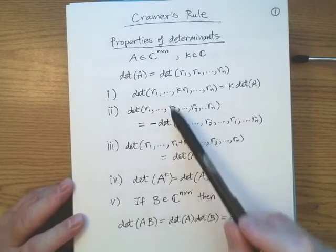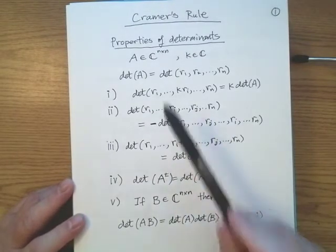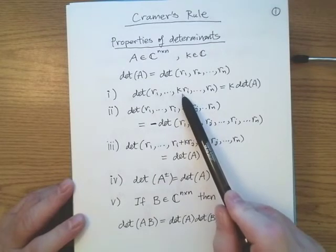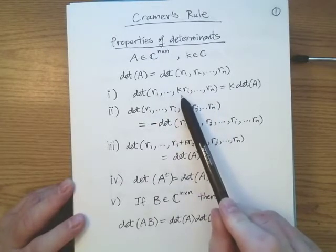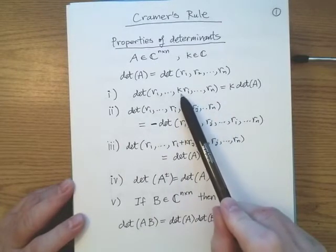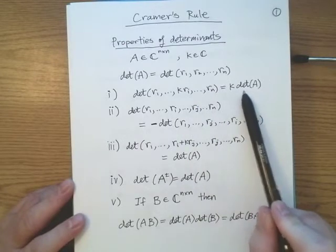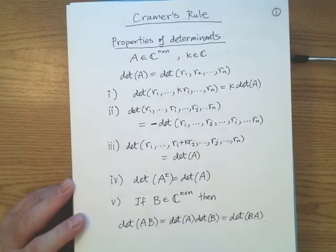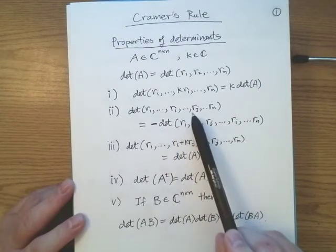Recalling properties of determinants with respect to elementary row operations: if I take any one of the rows and multiply that row by the scalar K, leaving the rest of the matrix unchanged, then when I take the determinant of that n×n matrix I can factor out K. It turns out to be K times the determinant of the original matrix A.